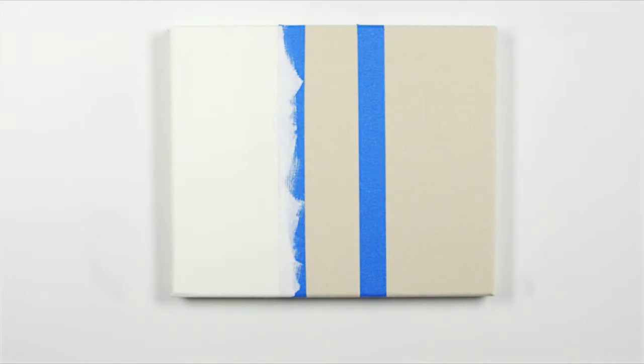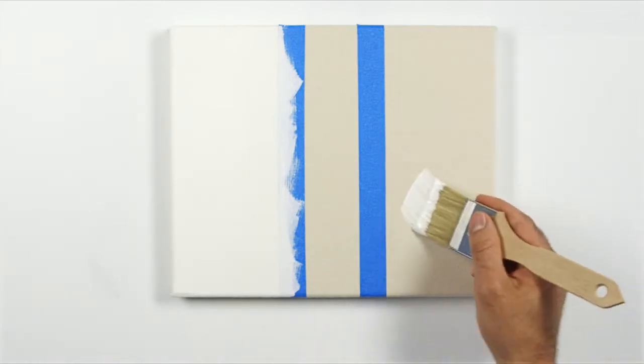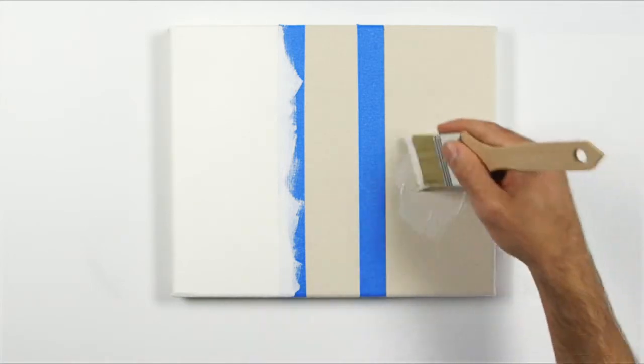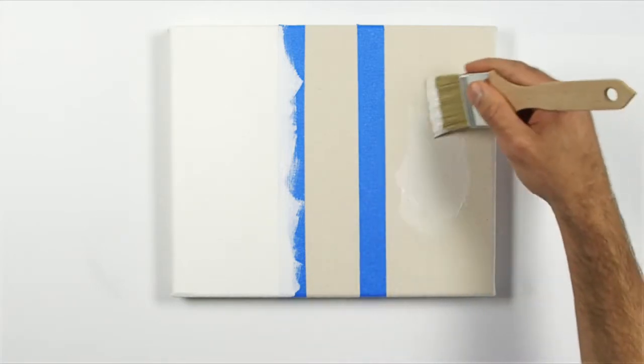Some artists like to keep a natural look to the canvas or linen they're painting on. This is clear gesso, which is a great way of sealing and protecting your surface while keeping the natural look of the material.